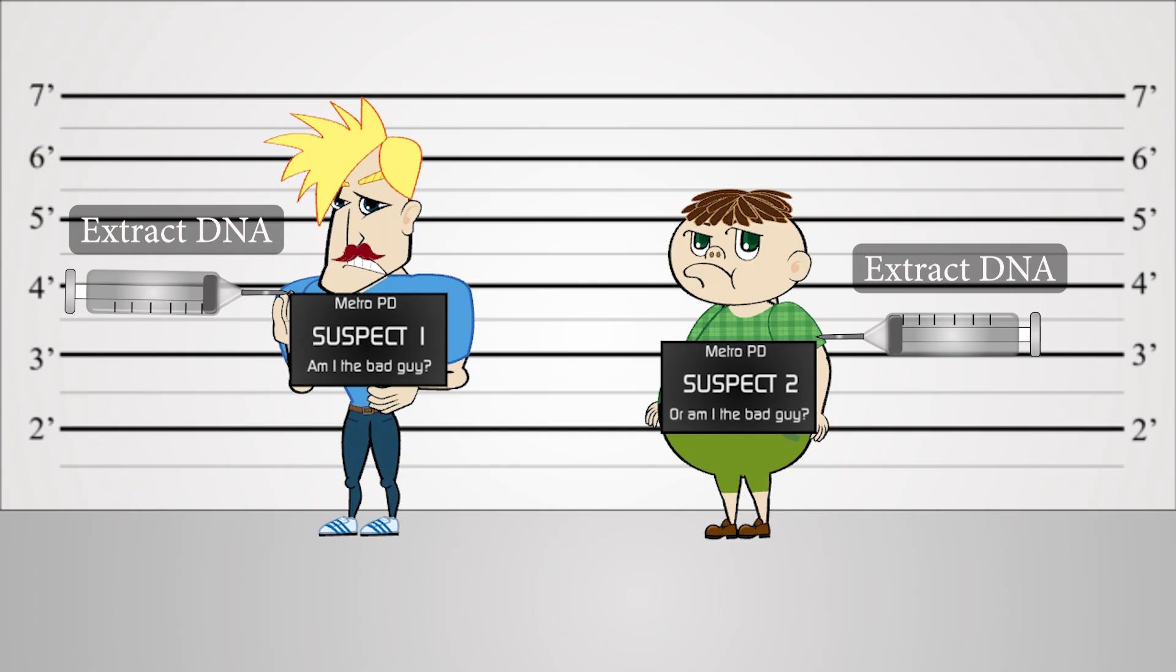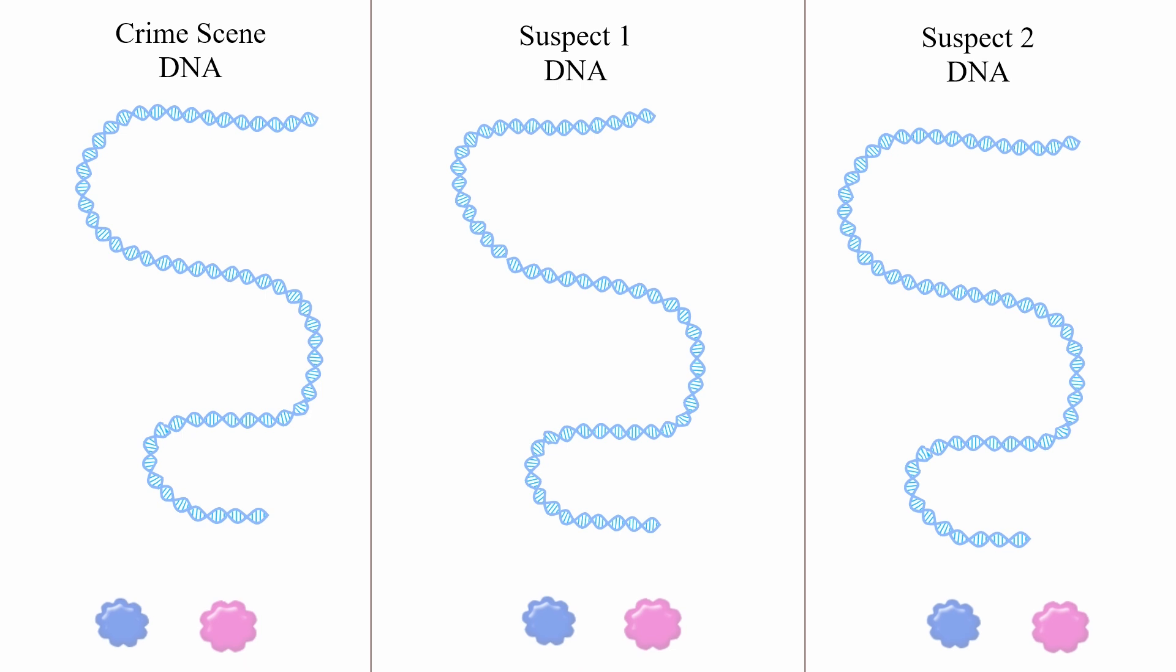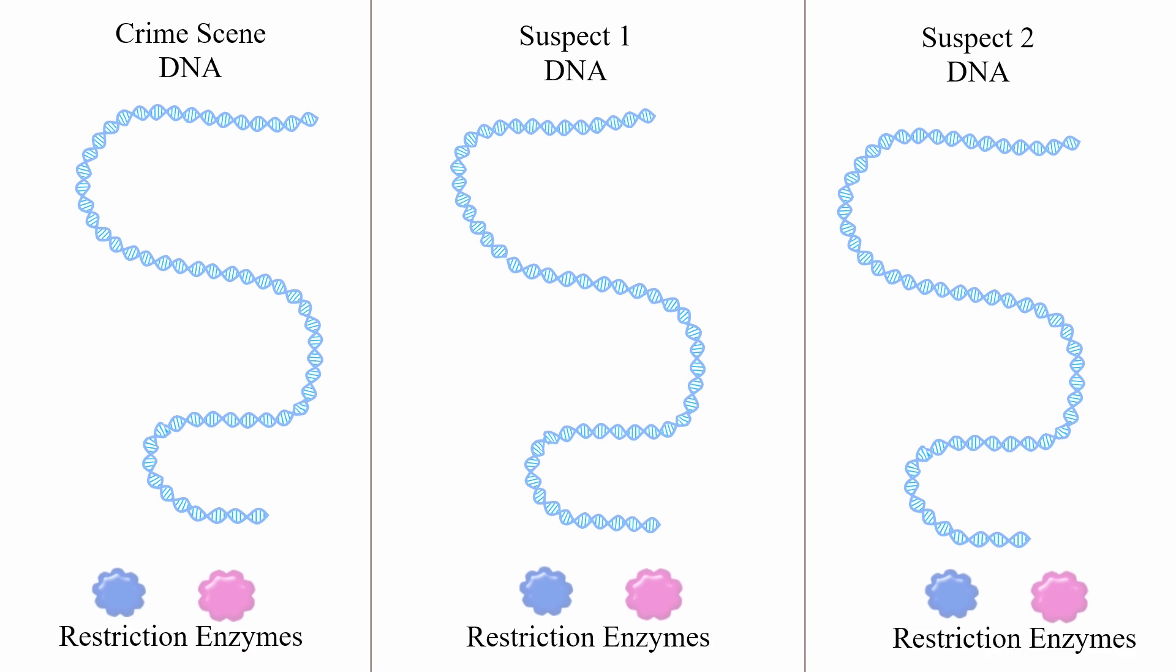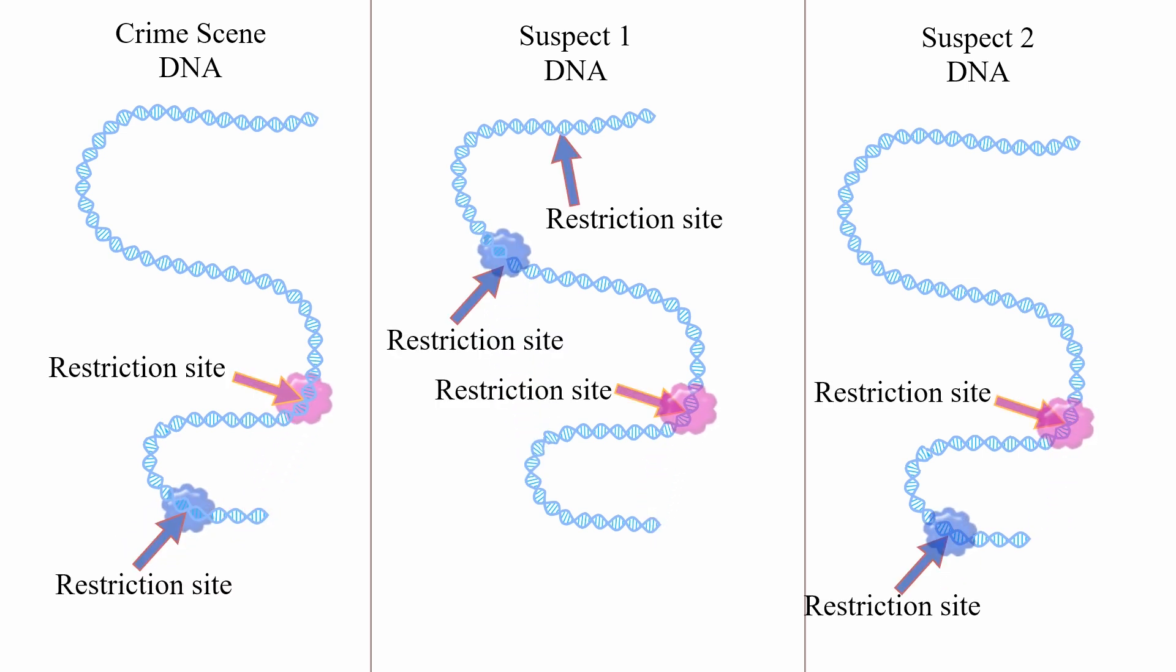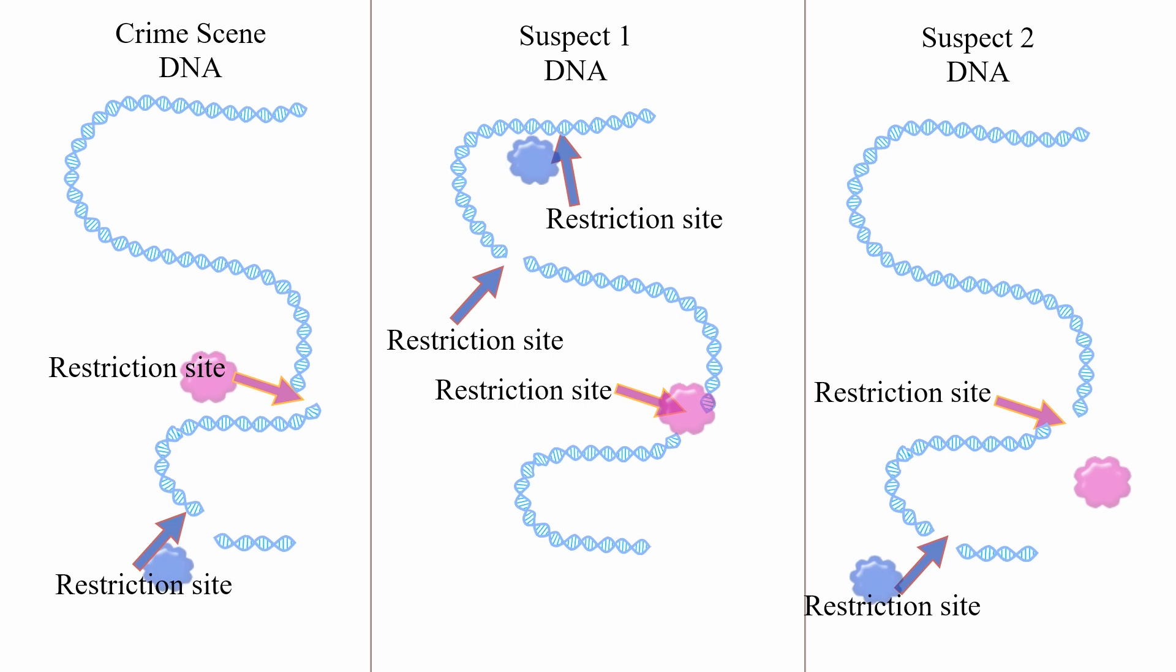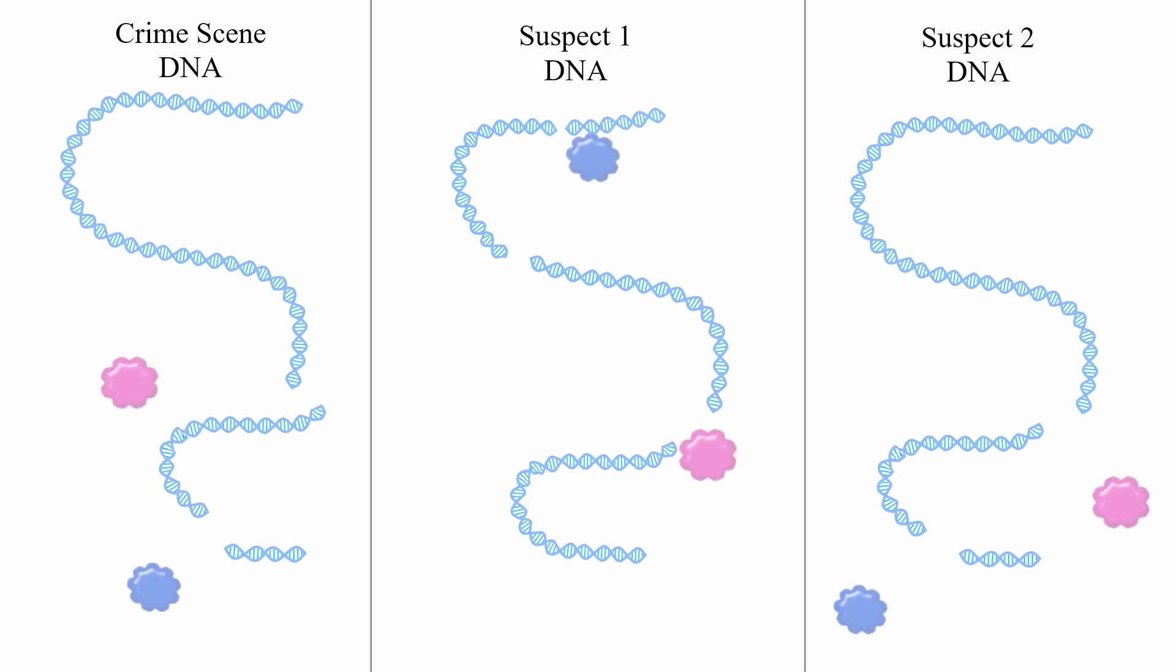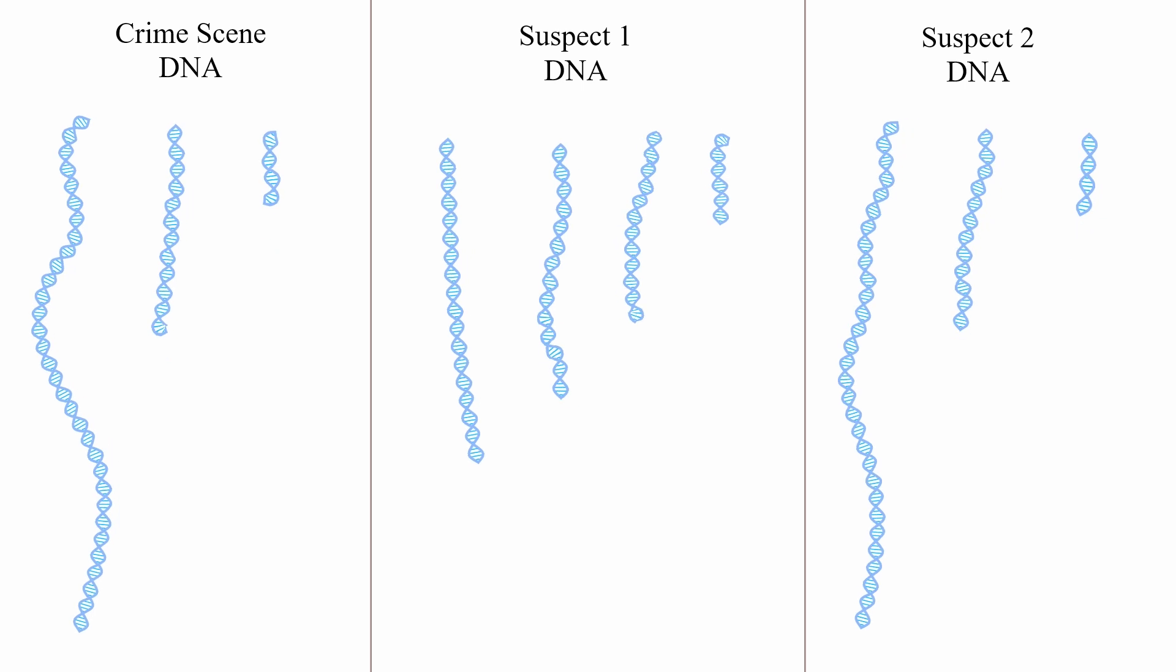Once you have obtained enough DNA from the crime scene and from your suspects, this DNA is cut with special enzymes called restriction enzymes. Each restriction enzyme cuts DNA at a very specific sequence called a restriction site. Since different individuals have different DNA, the location of these restriction sites varies. Therefore, different individuals end up with different sized fragments when their DNA is cut by restriction enzymes.